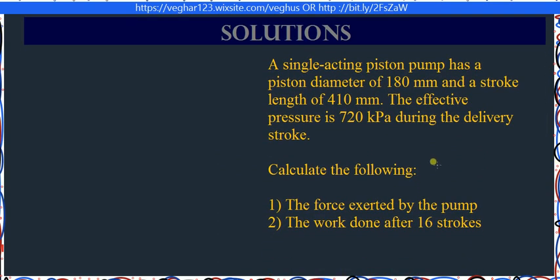This exercise states: a single-acting piston pump has a piston diameter of 180 millimeters, a stroke length of 410 millimeters, and an effective piston pressure of 720 kilopascals during the delivery stroke. Calculate the force exerted by the pump and the work done after 16 strokes.